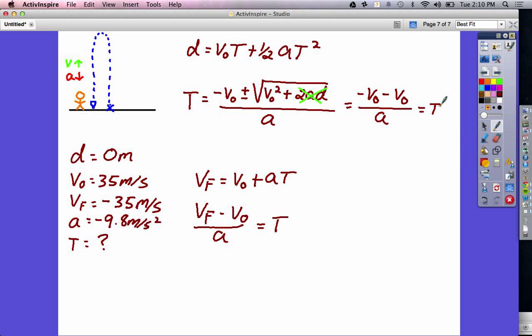And when we plug in our numbers, what does that look like? VF, or negative V0, is negative 35 meters per second, V0 itself is 35 meters per second, and the acceleration is negative 9.8 meters per second squared. And when we solve, what we are going to get is 70 divided by 9.8, and that is 7.1 seconds.